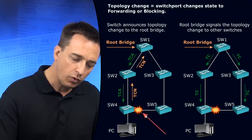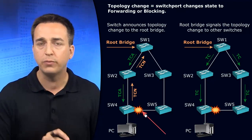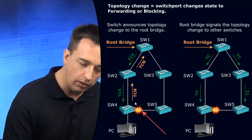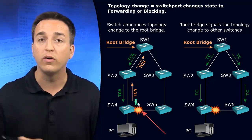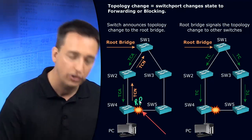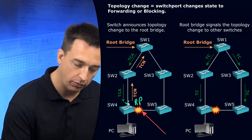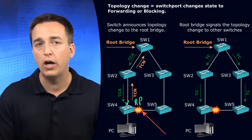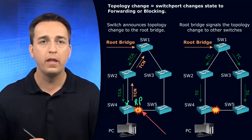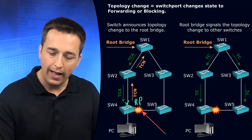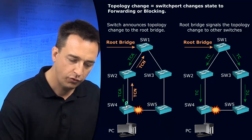Looking at our example, we have a direct topology change occurring on Switch 4. This direct topology change is a result of the link being unplugged or the port failing — the port being shut down potentially. Originally, that was the root port. This was the blocked port in our topology. So if this port fails, then that blocked port has to become the root port for the topology. It becomes the root port.